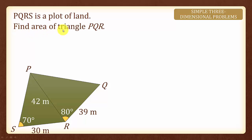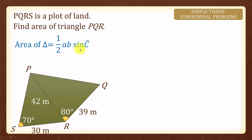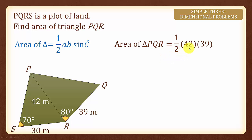Now, we are asked to find the area of triangle PQR. Since an included angle is given, we can use the formula: area of triangle equals to half AB sine C, whereby C is the included angle. We will have half multiplied by 42 multiplied by 39 multiplied by sine 80 degrees, which will give us 807 square centimeters, rounded off to 3 significant figures.